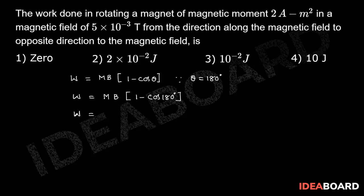W is equal to MB into 1 minus cos 180 which is minus 1. So W is equal to 2 MB, 2 into M value.